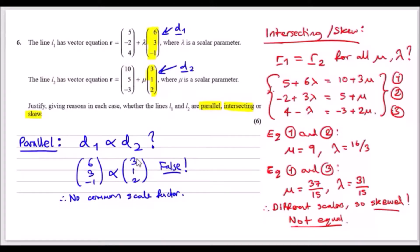To prove parallel, we look at the direction vectors and check if d1 is proportional to d2 — whether there's a scalar multiplier giving the same combination. Checking: for the first component, 3 is half of 6, but 1 is not half of 3, and 2 is definitely not half of minus 1. So we cannot find a common scalar factor, and the answer is: not parallel.